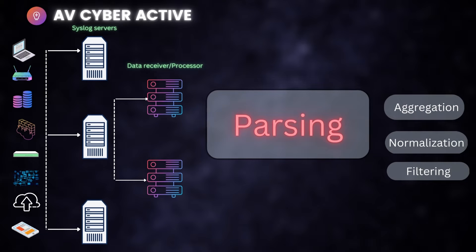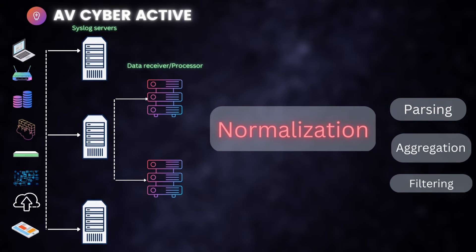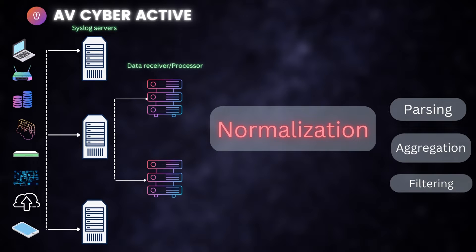The second process is parsing — it parses the data, extracting data elements from raw log data and presenting them in a human-readable format. Third is normalization, which categorizes the data further and maps records to a common event attribute for easy identification. This can be used when correlating similar events; for example, it normalizes into a login event, logout event, audit event, and a security event.